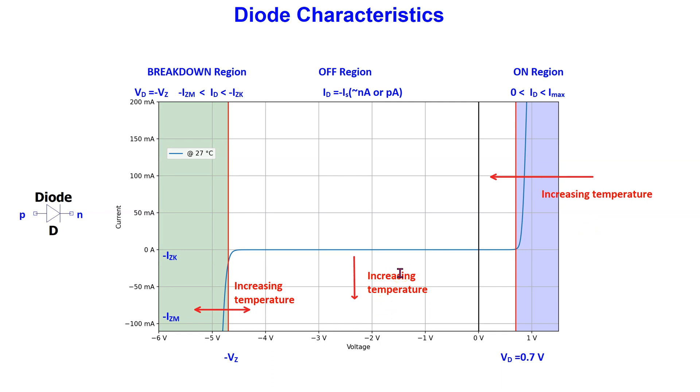When the diode is off, an increase in temperature shifts the curve down. The reverse saturation current approximately doubles for every 10 degrees C increase in temperature.